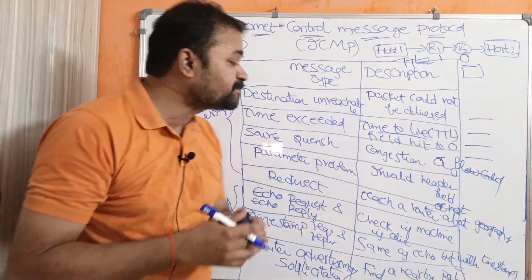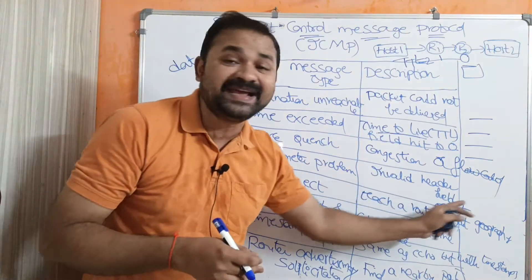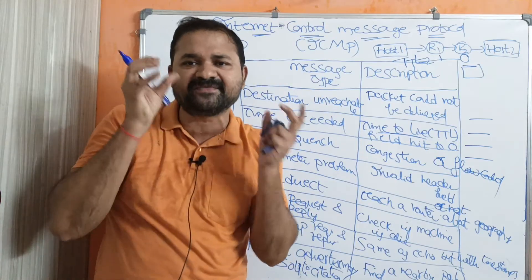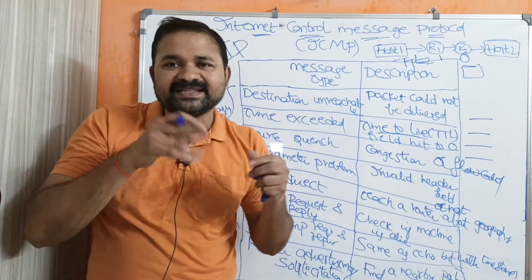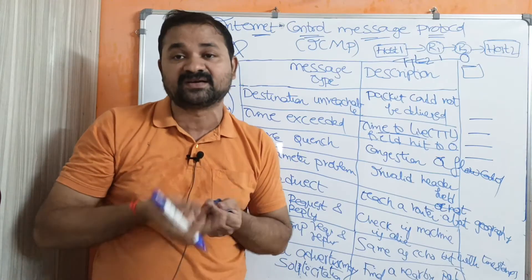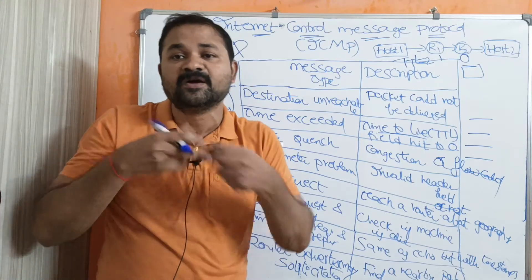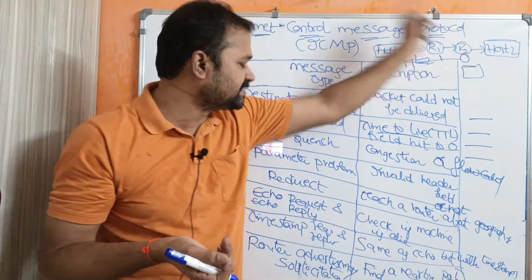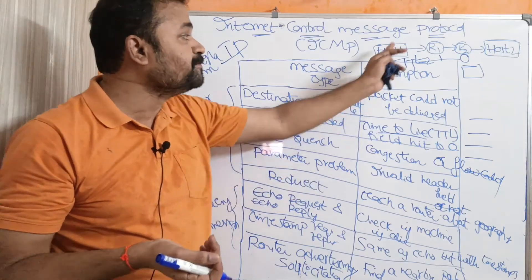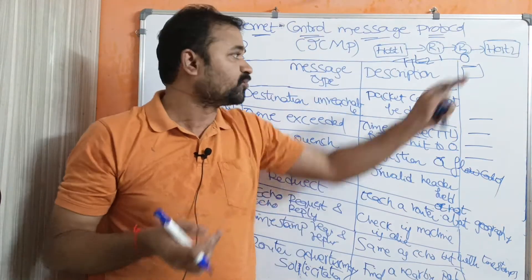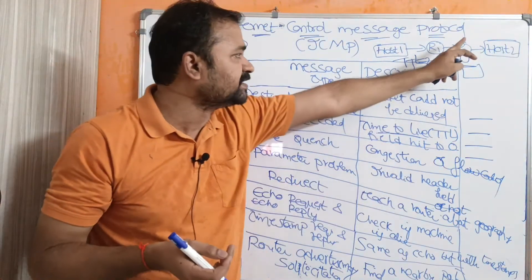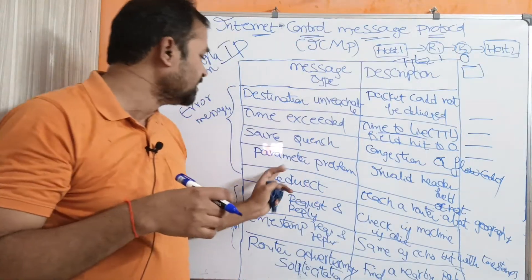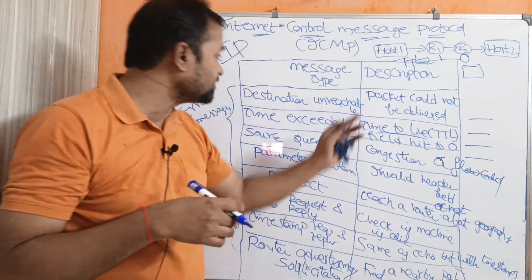The fourth error message is parameter problem. Here the problem is an invalid header field. Every packet has a header, and if there is an ambiguity in the header — some bits are modified — the router discards the packet and sends a parameter problem ICMP message to host 1.